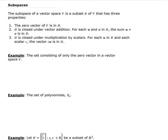The third property is if you take a vector in H and a scalar value, then when you take the scalar times the vector U in H, then that's also in H. So that is what we call H is closed under multiplication by scalars.